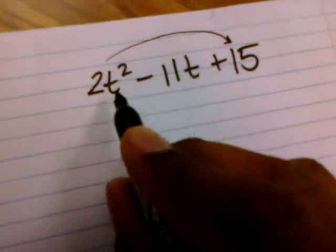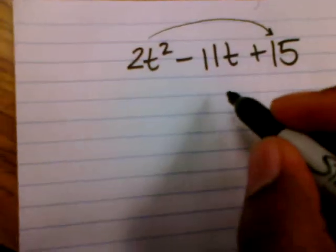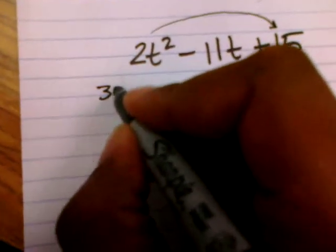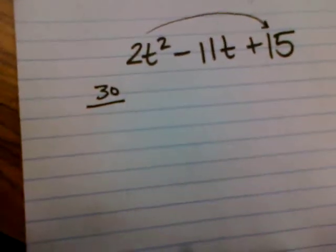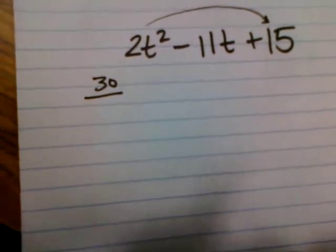All right, I'm going to multiply A times the C, which is 2 times 15. I'm going to get 30. I'm going to find the factors of 30 that give me a negative 11 when I add them together.